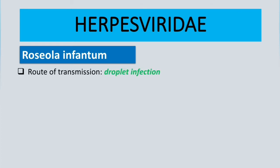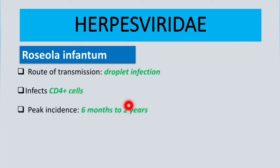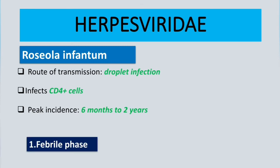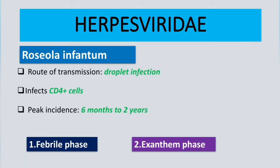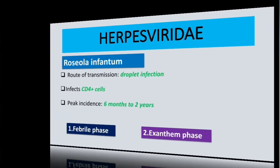The disease is transmitted mainly through droplet infection, particularly saliva. The virus infects CD4-positive cells, thereby causing immunosuppression. As the name 'infantum' implies, it mainly affects infants and young children, with peak incidence between six months and two years of age.